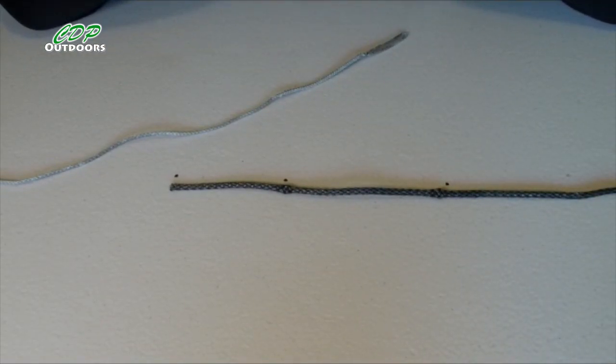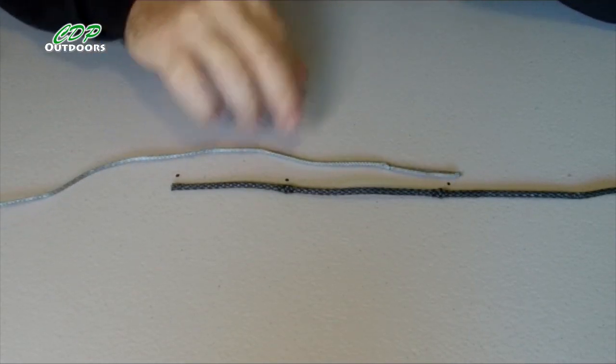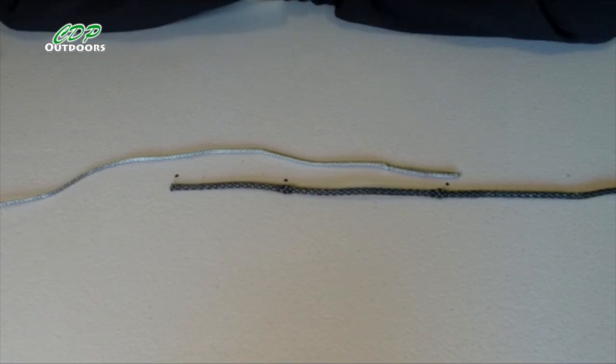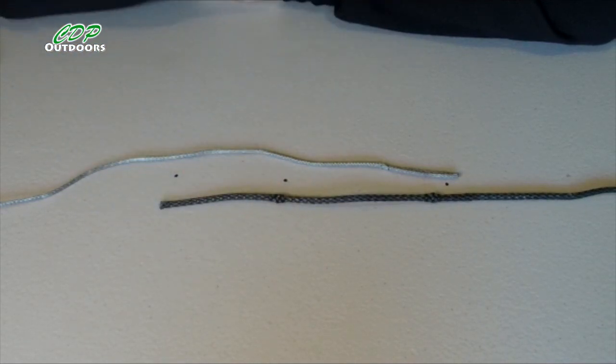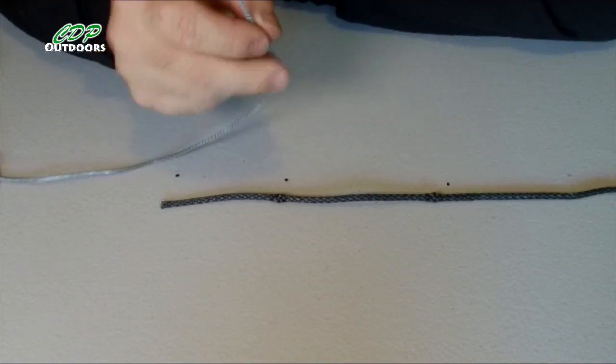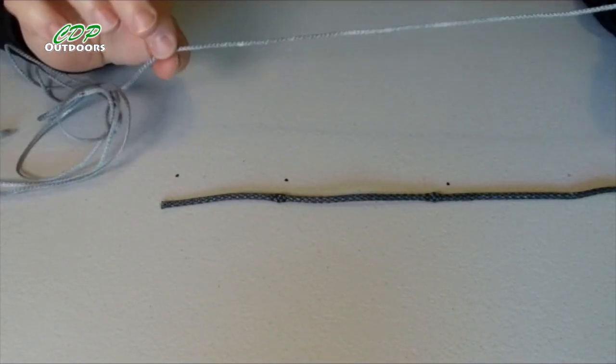G'day, I'm Clive and welcome to CDP Outdoors. Today I'm going to show you how to make a loop, the locked brummel, and how to bury the tail of the dyneema here. So you're able to make a structural bridge line the same as I made here for my hammock.